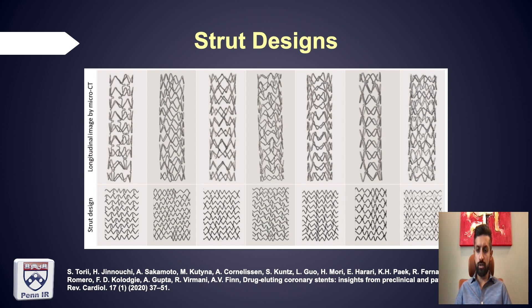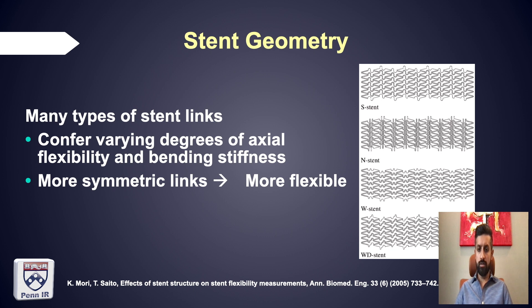Beyond open or closed cell, struts can have varying designs resulting in different mechanical behaviors, including varying strut lengths, free cell areas, shapes, cross sections, and strut angles. Different strut designs are also related to the many types of stent links, which confer varying degrees of flexibility and bending stiffness. In general, the more symmetric the links, the more flexible the stent will be.